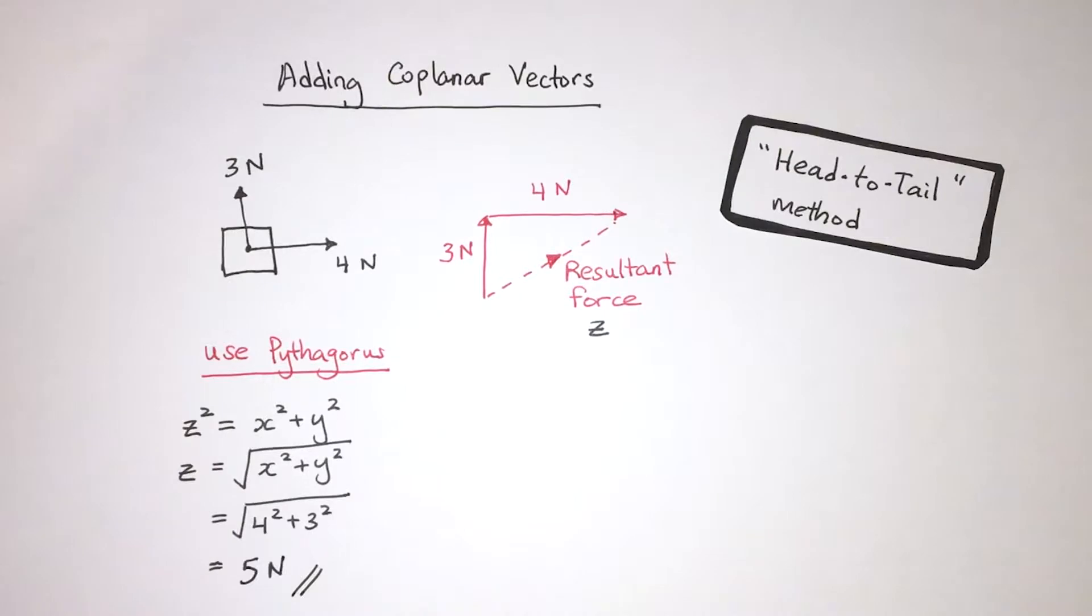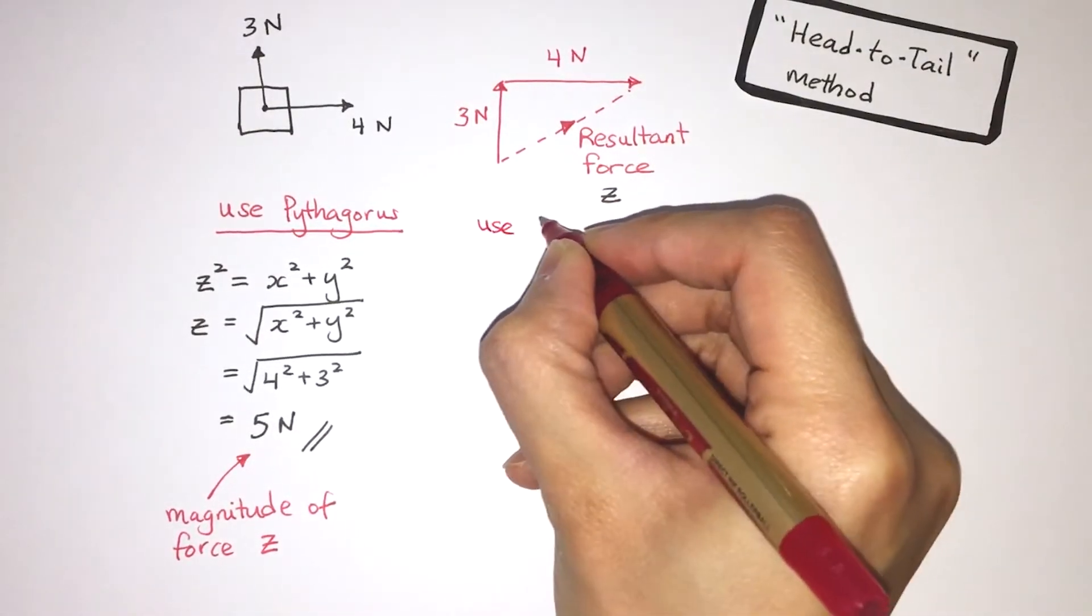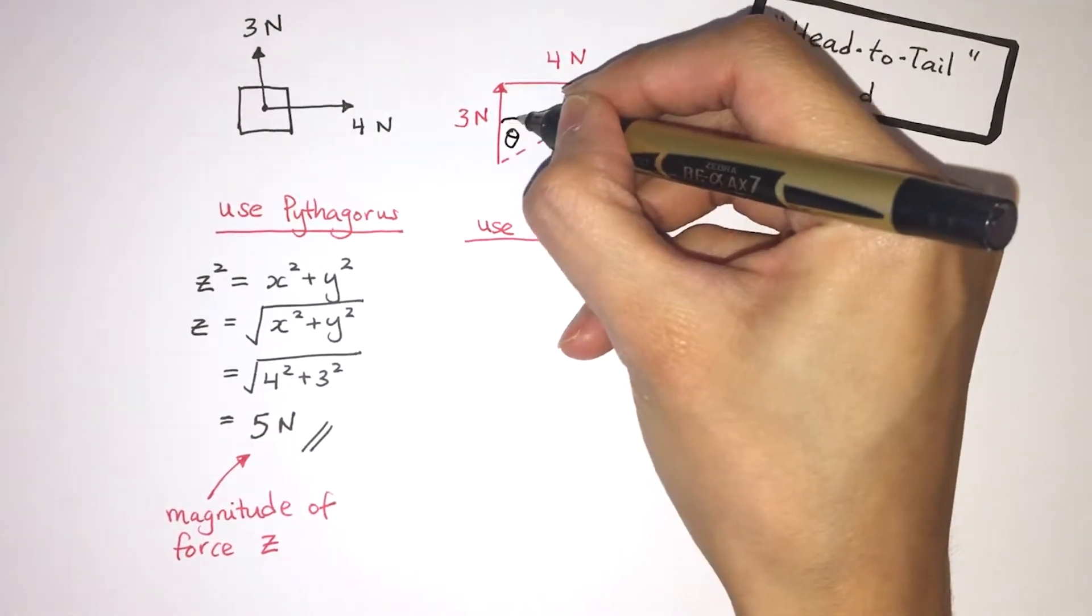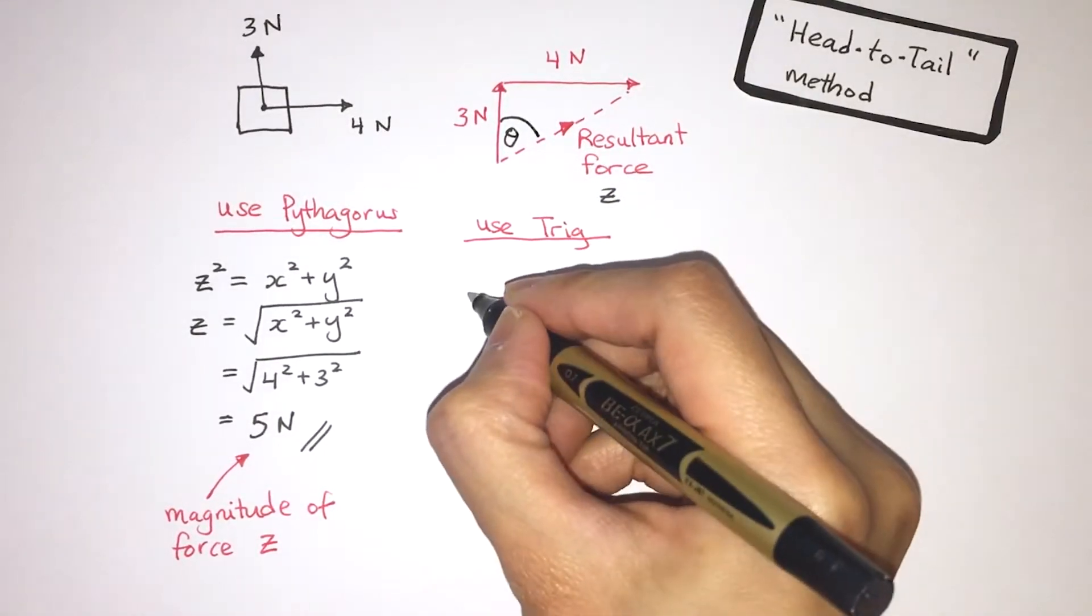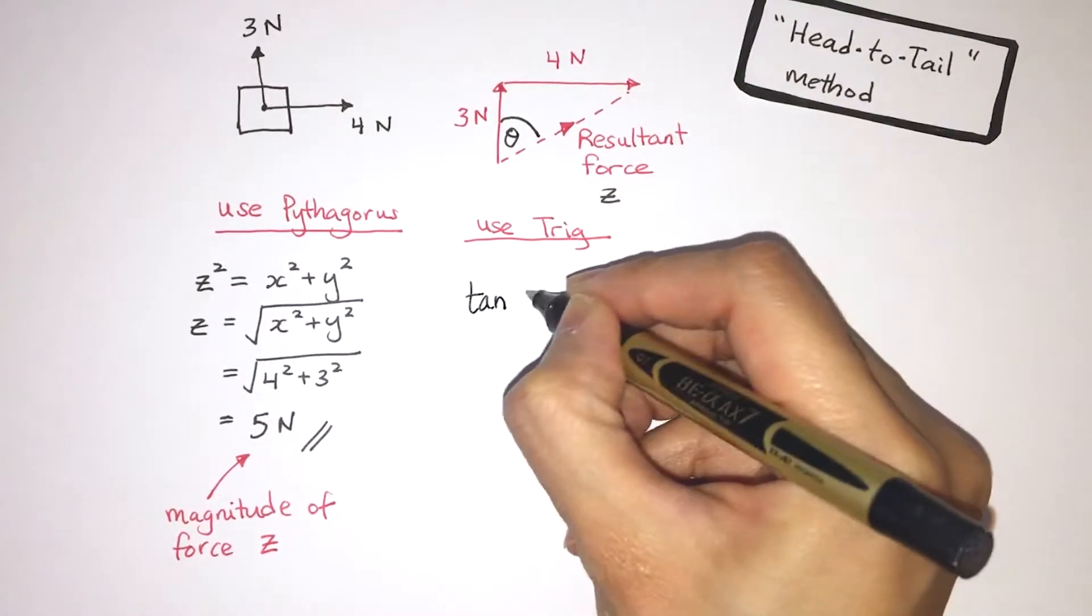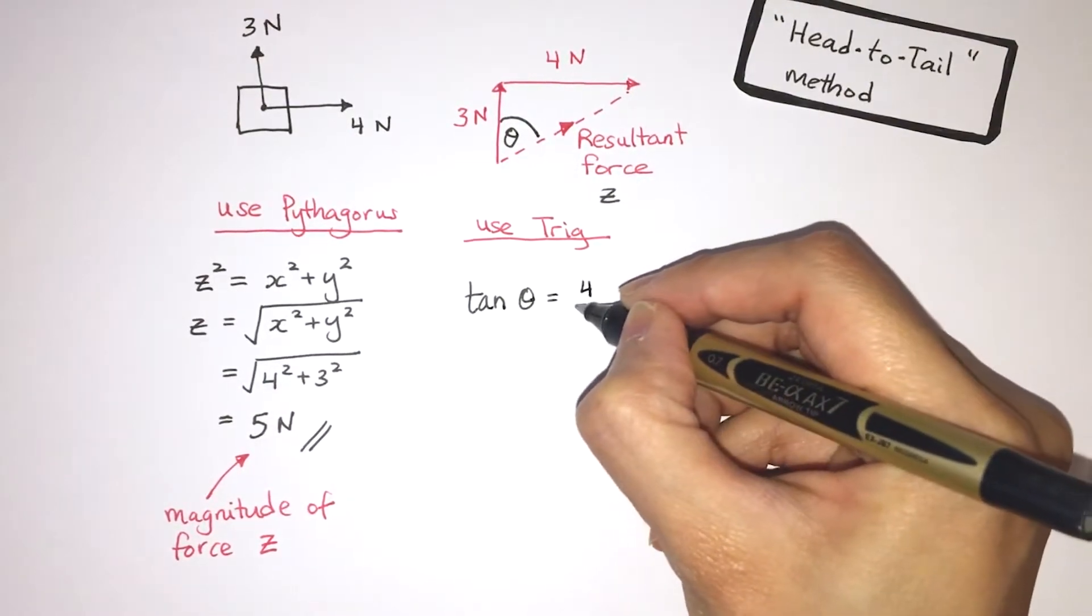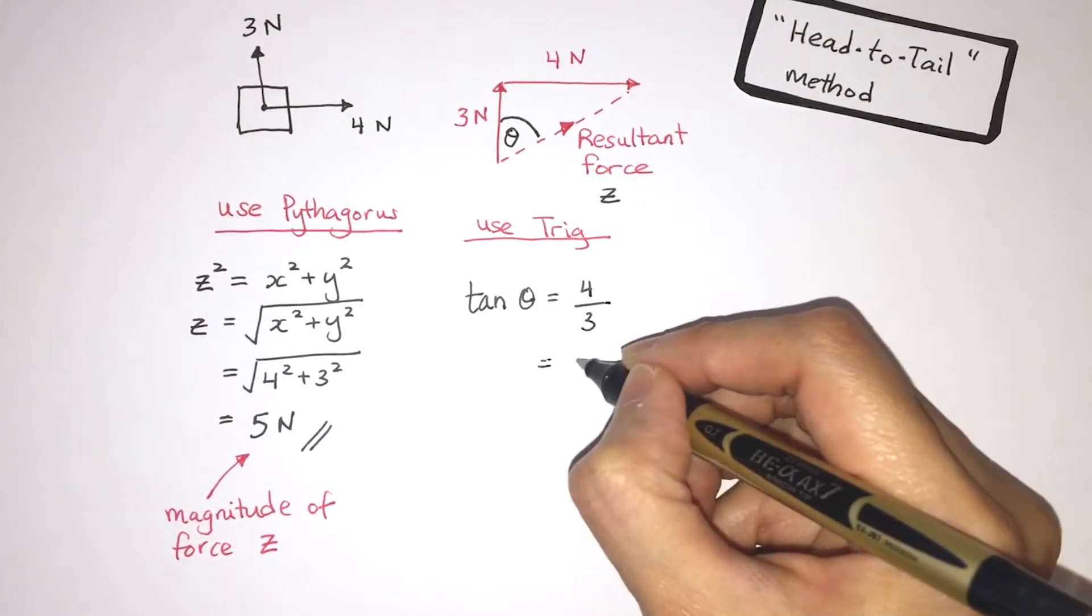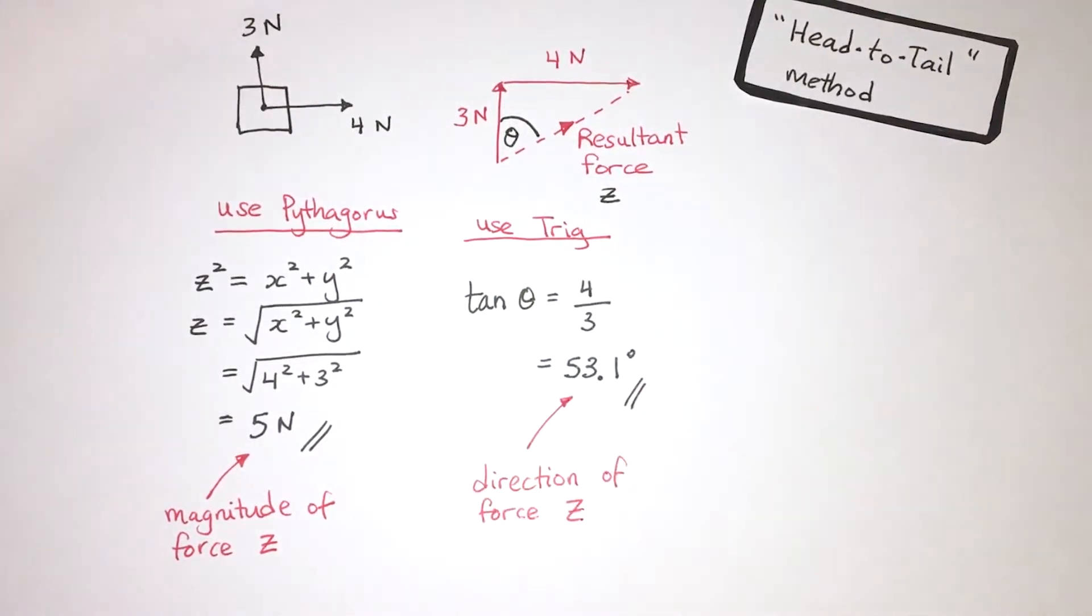But I can't just stop there because a vector also has a direction. So I'm going to use trigonometry to figure out the angle theta. And theta is representing the direction of my resultant force. So tan theta is equal to the opposite divided by the adjacent. And in this case, that is 4 divided by 3. That gives me an angle of 53.1 degrees. That is the direction of my resultant force.